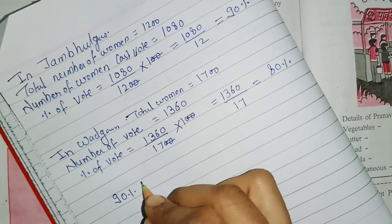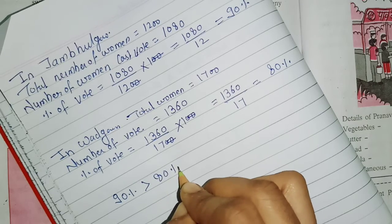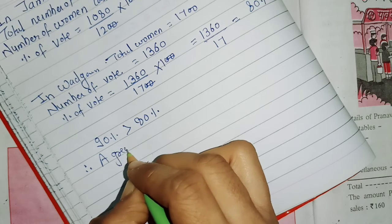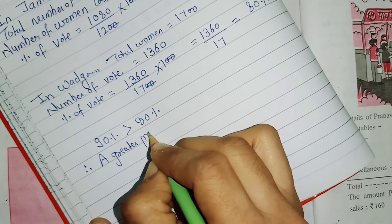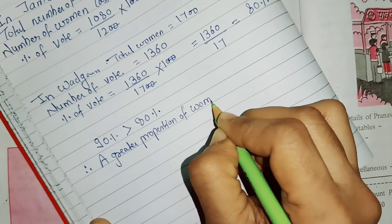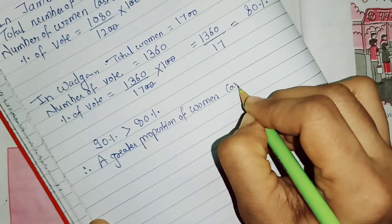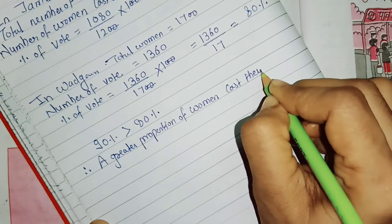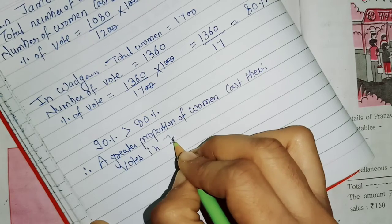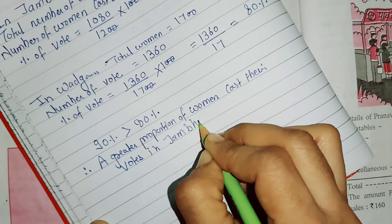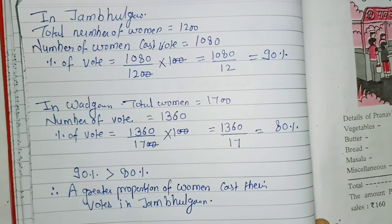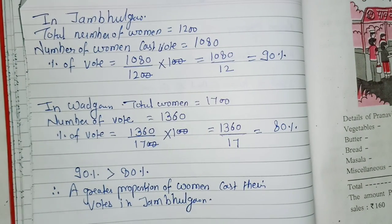Since 90% is greater than 80%, a greater proportion of women cast their votes in Jambalgaon. So children, with this we have completed Practice Set 30. Thank you.